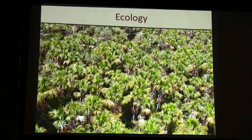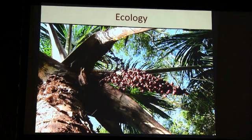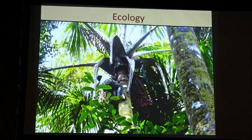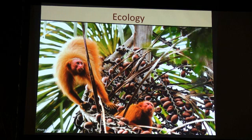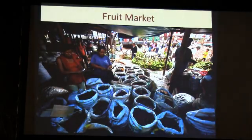Abuahe is a palm found throughout the Amazon rainforest and it forms these very dense stands of trees that can be hundreds of hectares in size. The female trees produce very large racines of fruit and as you can see in this picture it's almost the size of a full grown man. Each racine can hold hundreds of thousands of actual fruit. This fruit provides a really good food source for a lot of animal species such as these red rocari monkeys.